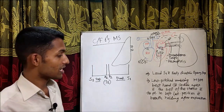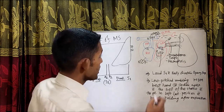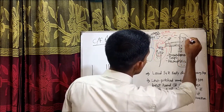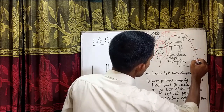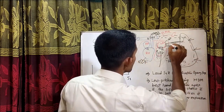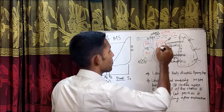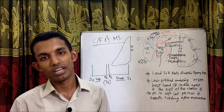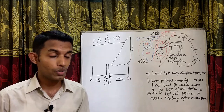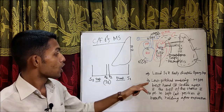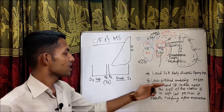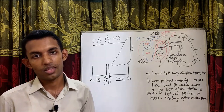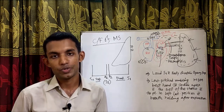We ask the patient to hold the breath after expiration. After expiration, the lung is compressed, so blood from the lungs rushes to the left atrium; more blood then flows through the mitral valve, increasing the intensity of the murmur and making it easier to hear. Therefore, auscultation findings in mitral stenosis: loud S1 with early diastolic opening snap and low-pitched rumbling mid-diastolic murmur, best heard at the cardiac apex with the bell of the stethoscope, patient in left lateral position, with breath holding after expiration.